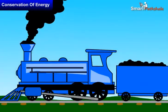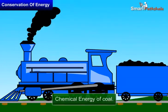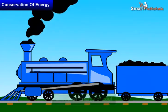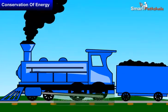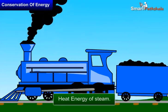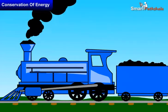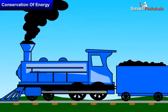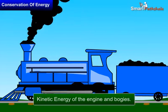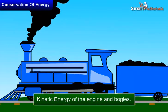In a running steam engine, the chemical energy of coal is converted into heat energy of steam, and then this heat energy is converted into kinetic energy of the engine and bogies.